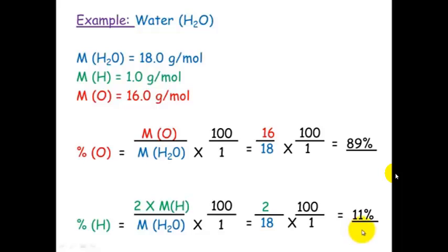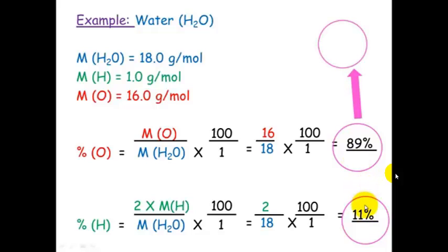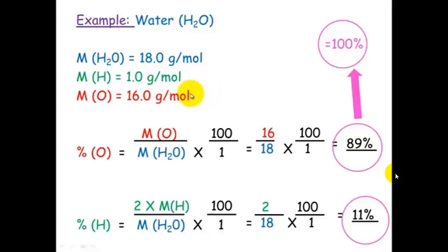You can check your answers whenever you're working out percentage composition because the addition of your answers always has to equal 100%, since the total weight of the compound needs to equal 100% with each of its components adding up to that 100%.